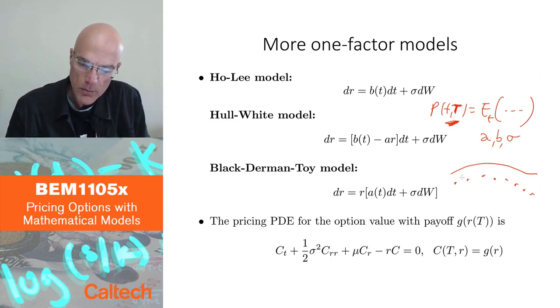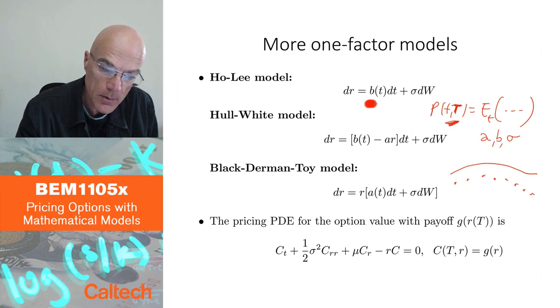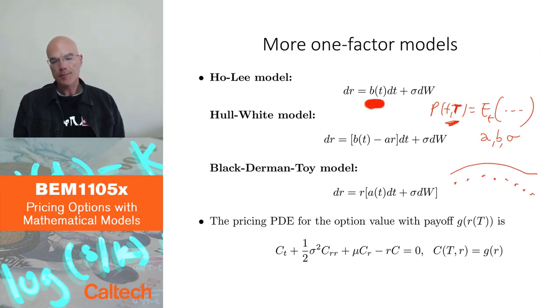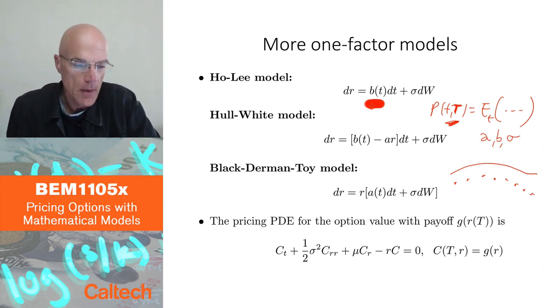So with infinite, if you're trying to calibrate your model to the yield curve, you are really trying to calibrate it to this infinitely many points, this whole curve. And to do that perfectly, you would need infinitely many parameters, and in the Ho-Lee model, you do have infinitely many parameters by introducing this b(t) function.